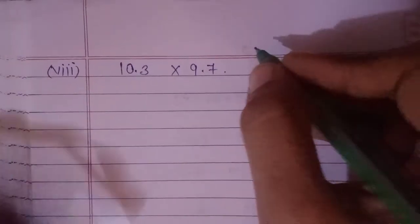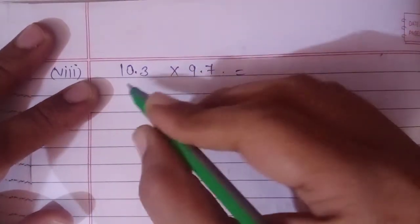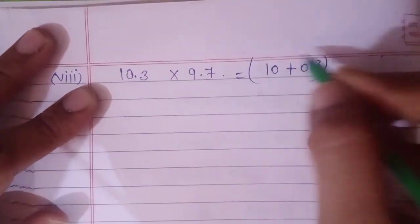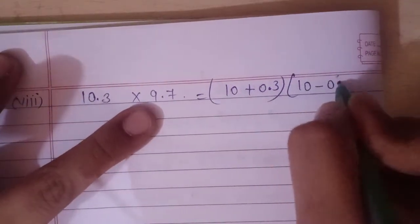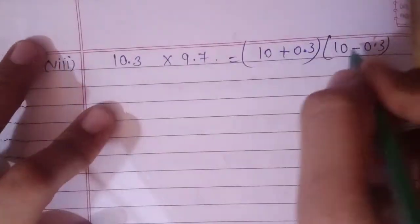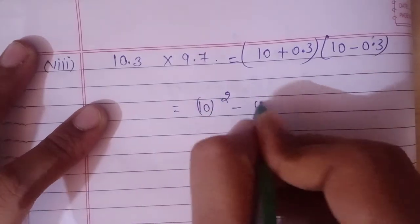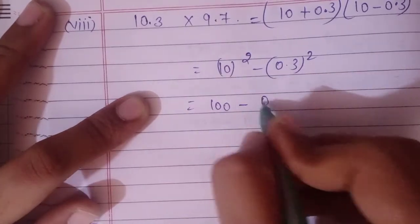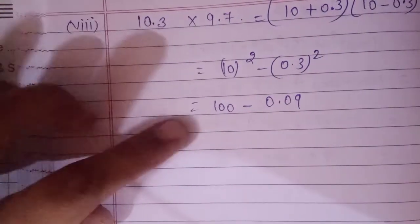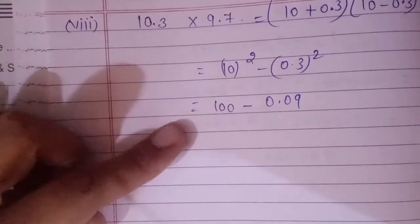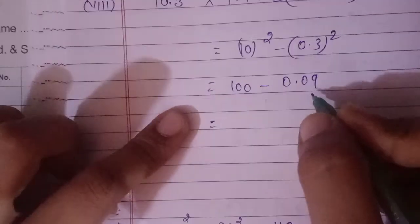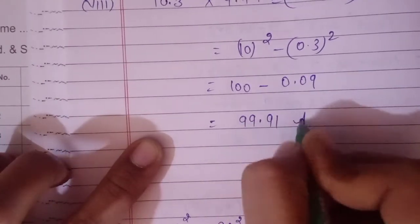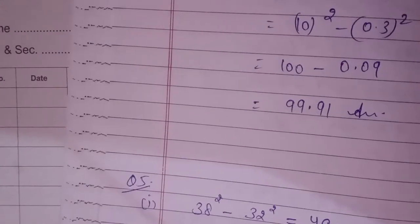Next: 10.3 × 9.7. The same question, only the difference is that now it is in decimal. Write 10.3 = 10+0.3 and 9.7 = 10-0.3. Use the formula: 10² - (0.3)² = 100 - 0.09 = 99.91. This will be the answer.